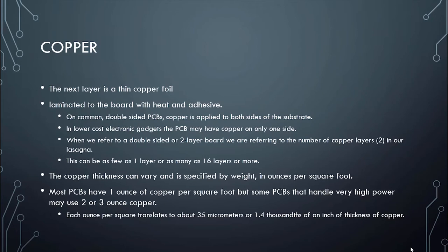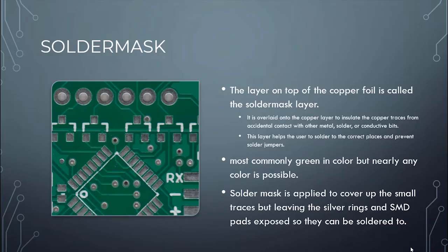Copper thickness can vary and is measured by weight — density per square foot. Most PCB boards have one ounce of copper per square foot, but some have two or three ounces for larger channels and vias. Each ounce per square foot translates to about 35 micrometers or one ten-thousandth of an inch of copper thickness. This is what we refer to as a pour — a one ounce pour or two ounce pour. Above the copper we have a solder mask.